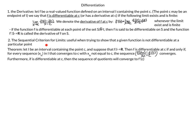Next we look at the sequential criterion for limits, which is useful when showing that a function is not differentiable at a particular point. The theorem states: let I be an interval containing point C and suppose f: I → ℝ. Then f is differentiable at C if and only if for every sequence {xₙ} in I converging to C with xₙ ≠ C, the sequence f(xₙ) minus f(C) over xₙ minus C converges. If differentiable, this sequence converges to f'(C).